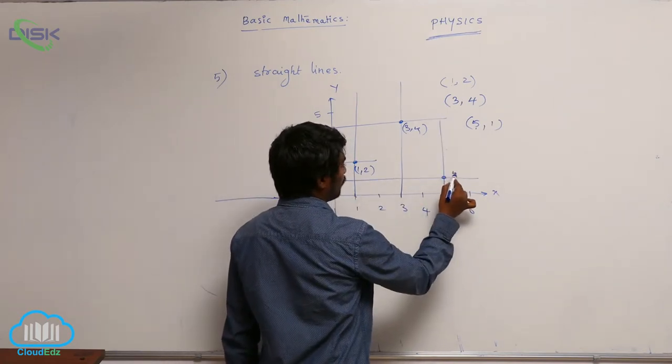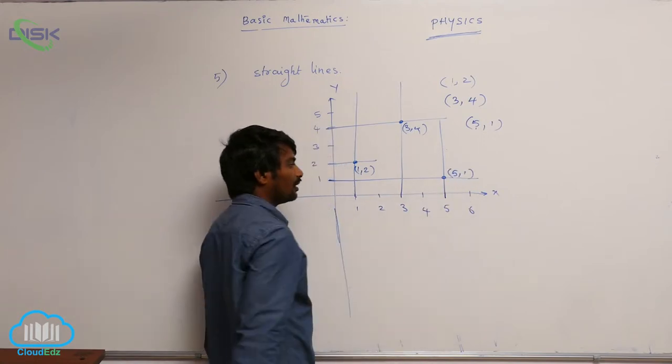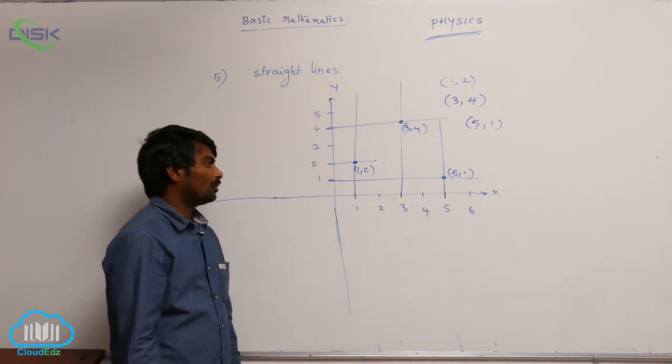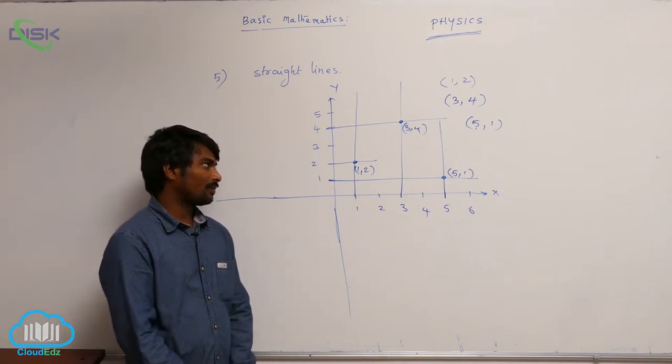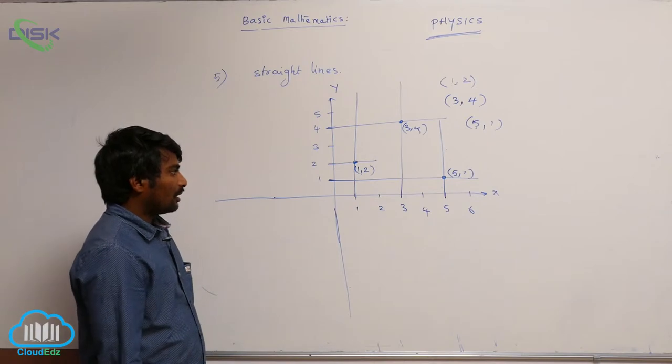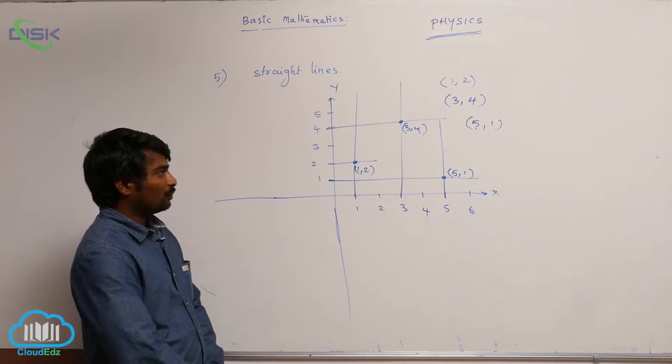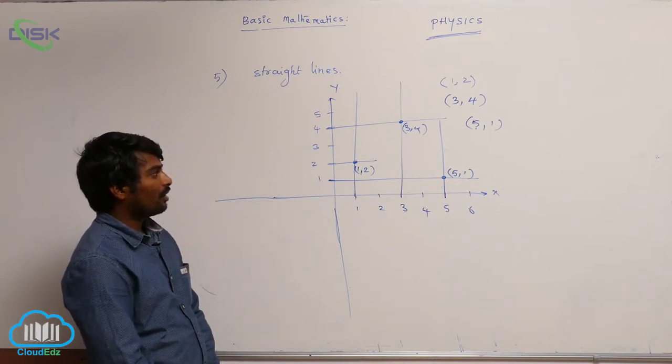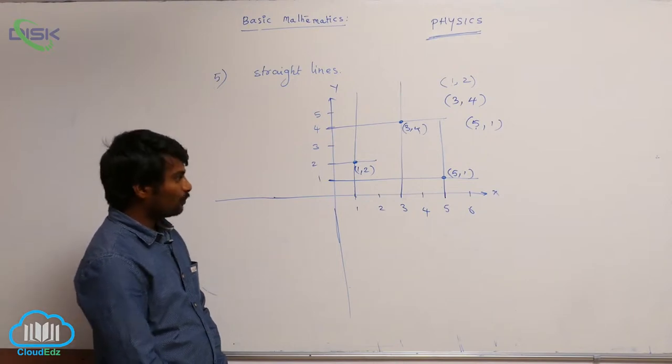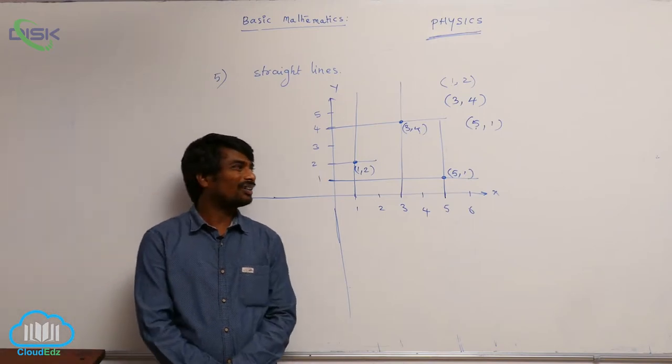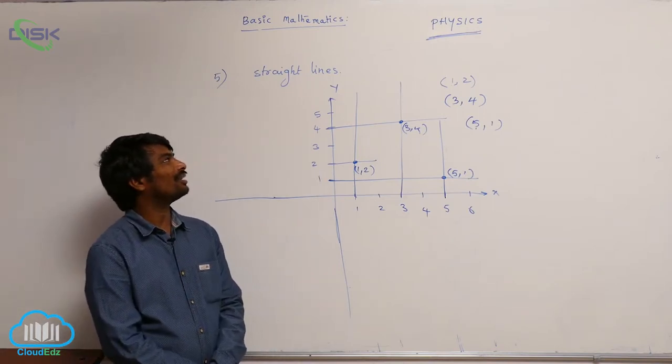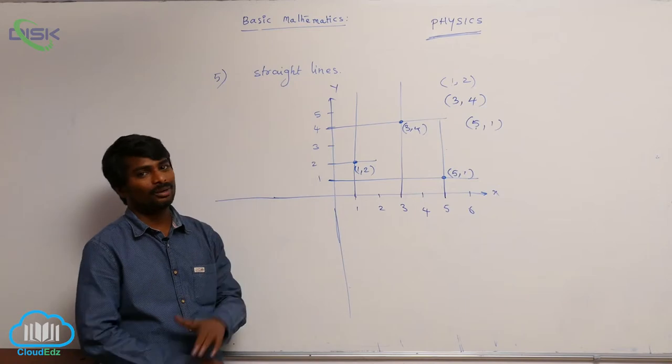So this point is for (5, 1). In this way we are going to identify the points. Now, whenever we know two points, how to calculate this slope, how to calculate this straight line equation - that is what I am going to study in this topic.